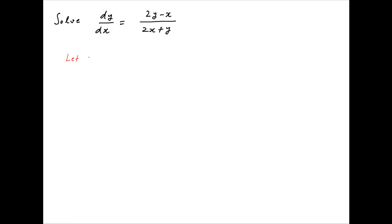We start with the substitution y is equal to vx. Taking the derivative of both sides we get dy upon dx is equal to v plus x times dv upon dx.